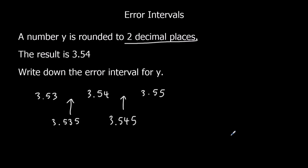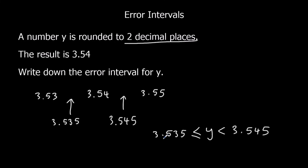So now our inequality notation: we've got y in the middle. The lower bound is 3.535 — y is bigger than or equal to 3.535. And y is less than 3.545. So it can equal the lower bound, so we've got the bigger than or equal sign. But it can't equal the upper bound, so it's just less than — not less than or equal. And that's our answer.